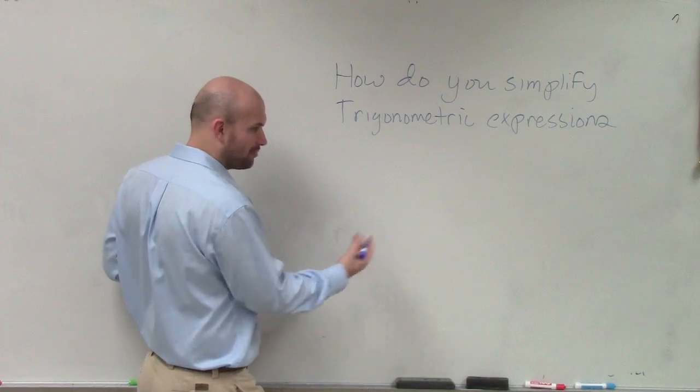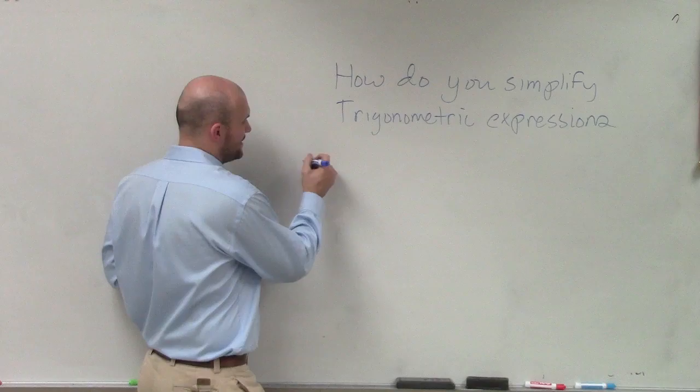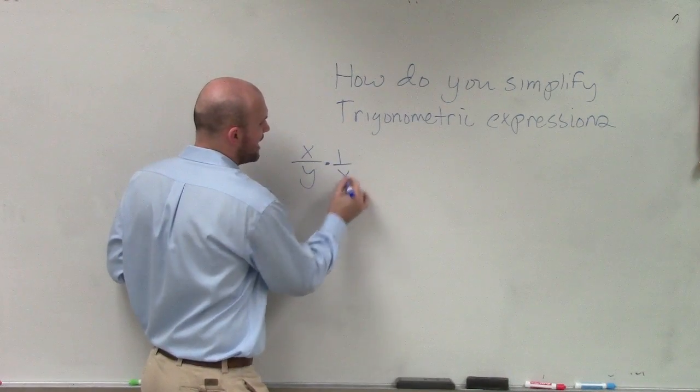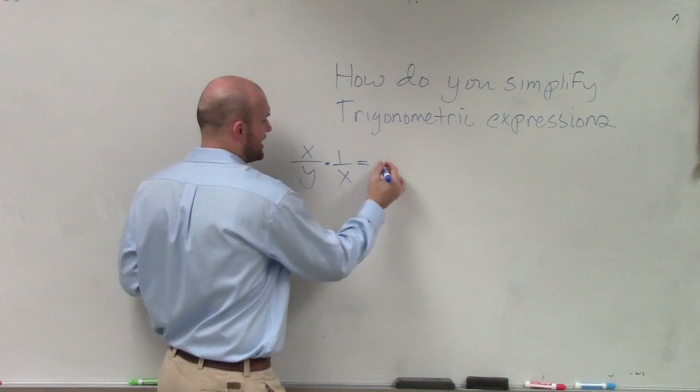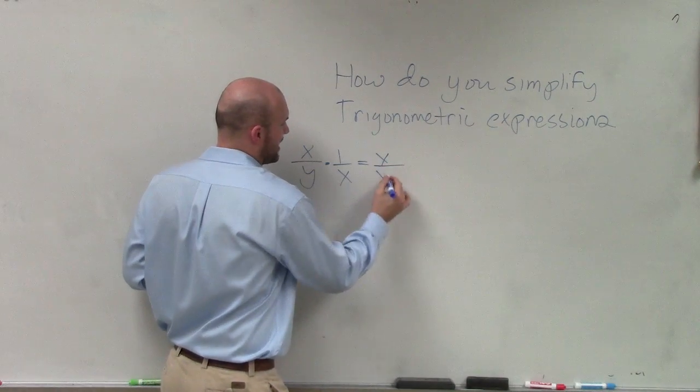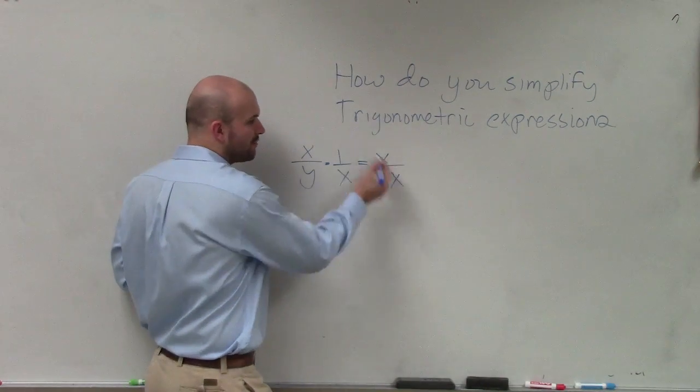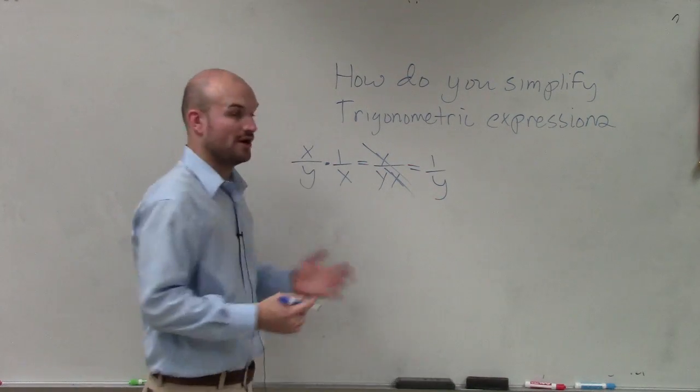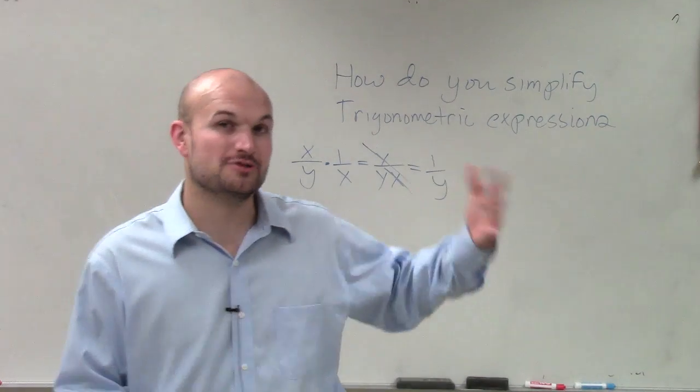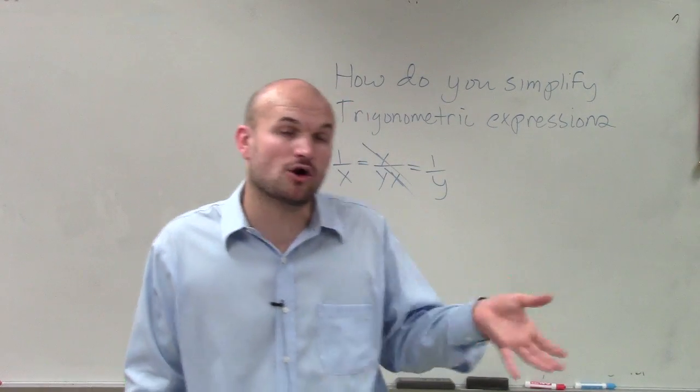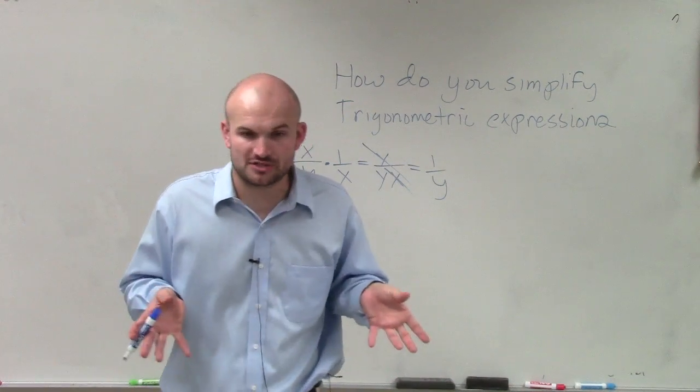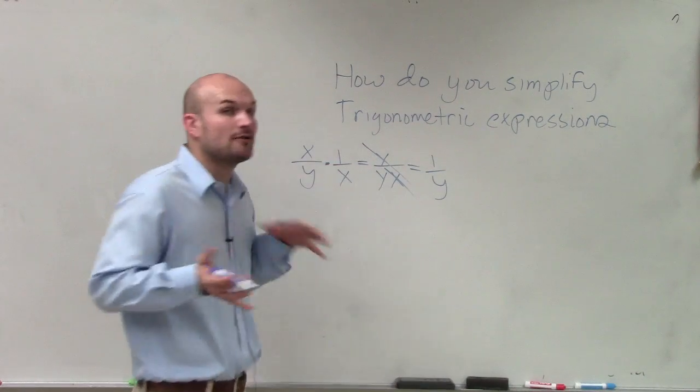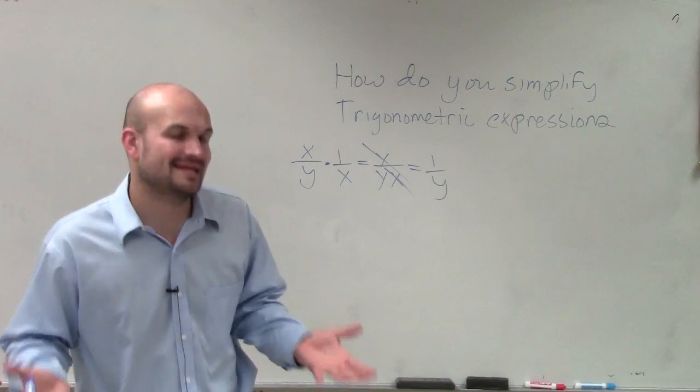The first one is our reciprocal property. If we have x over y times 1 over x, remember we can rewrite that as x divided by y over x. Therefore, the x's are now going to divide to 1, and I'm just left with 1 over y. So it's very important, especially when we're multiplying rational expressions or we just have one rational expression, we always want to look for that opportunity to be able to divide out our trigonometric terms so they can equal 1.